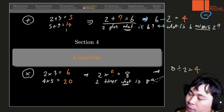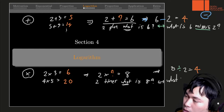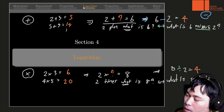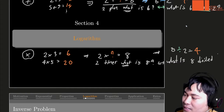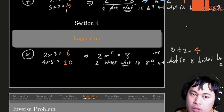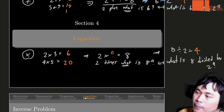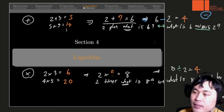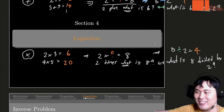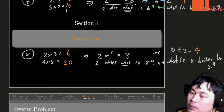Likewise, once we introduce a new notation we can then ask what is 8 divided by 2. So that's how multiplication and division are paired together. Division is invented to be the counterpart, or the inverse problem, of multiplication.